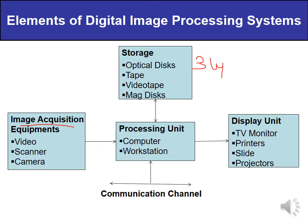Mass storage is required for keeping or storing images. It is of three types depending upon the type of application and processing. First is short-term storage, which is used during the process only. Second is online storage, which is used for relatively fast recall. Third is archival storage, which is for infrequent access. There is also a requirement of a processing unit, used for image processing. It may be a general purpose computer or supercomputer, and may include image processing hardware or image processing software.